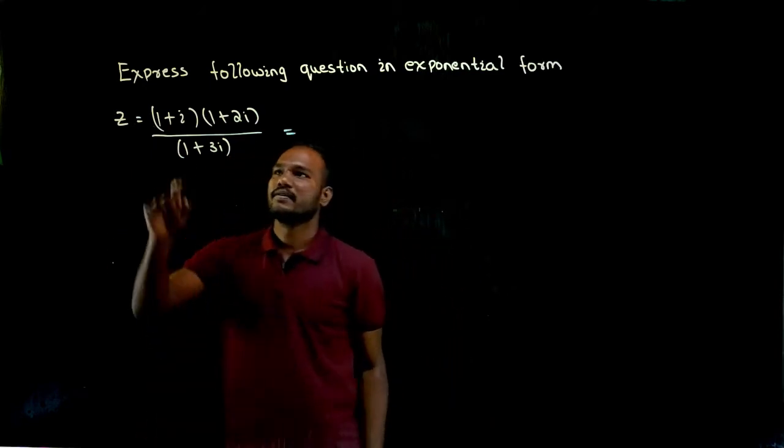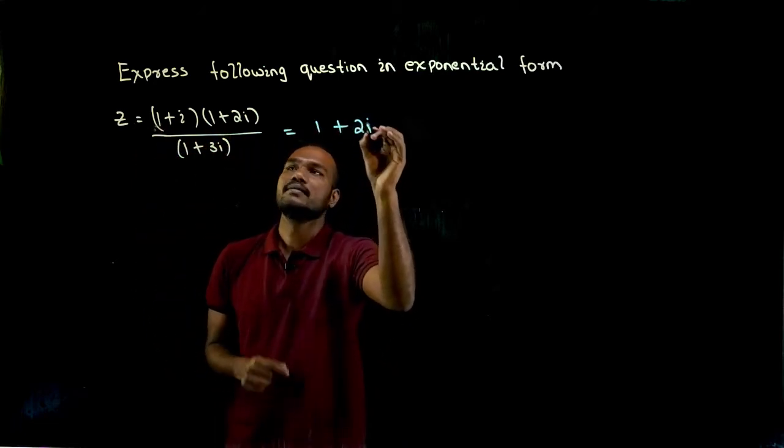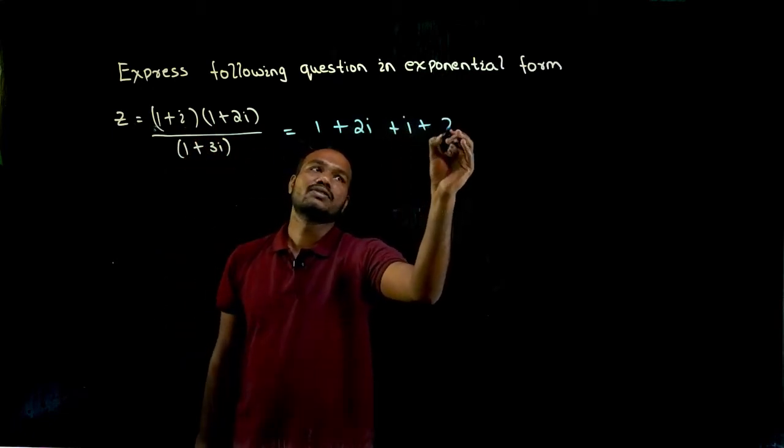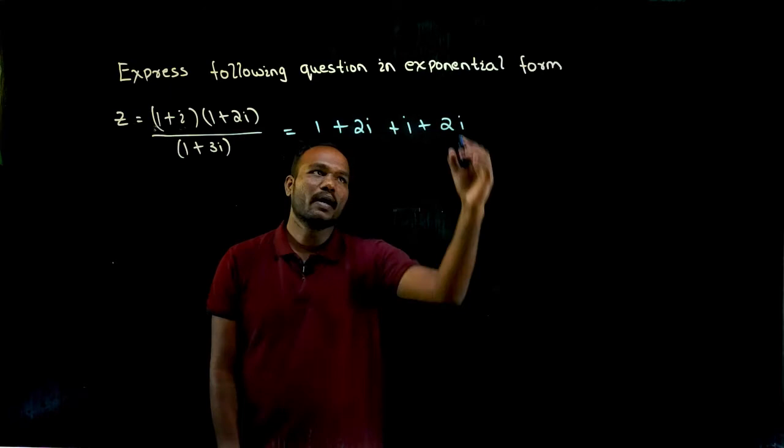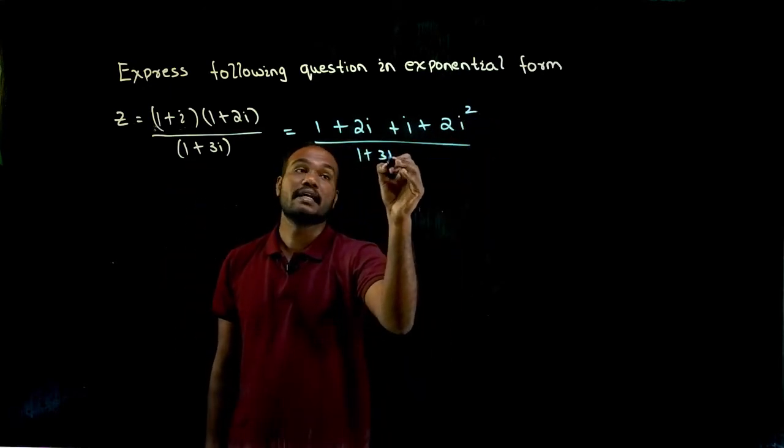So how do we do it? We take one number, multiply: 1 into 1 is 1, plus 1 into 2i is 2i, plus 1 into i is i, and i into i is i square. So 2 into 1 is 2, so 2i square divided by—again, 1 plus i is there, 1 plus 3i is there. Let's keep it as it is.